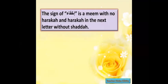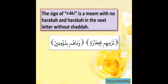'Lahum bihijarah' or 'Tarmihim bihijarah.' The sign of Ikhfa' is a Meme with no haraka — no vowel — and a haraka in the next letter without a Shadda. For example, in 'Tarmihim bihijarah,' I have an empty Meme followed by Ba, and this Ba has a kasra. It comes by coincidence with a kasra under the Ba, but it might be any other haraka — fatha or dhamma. It doesn't have to be kasra.